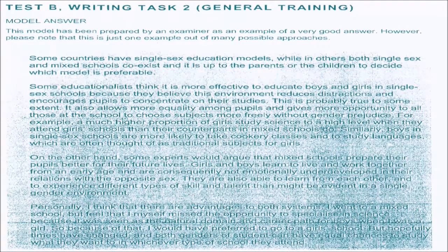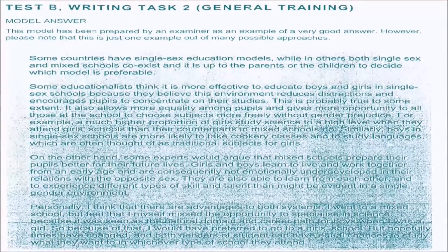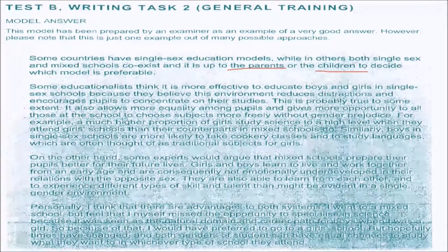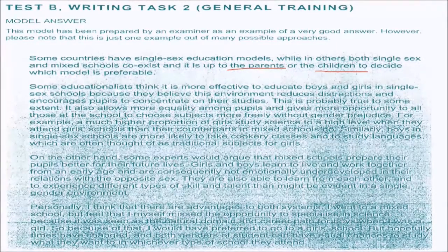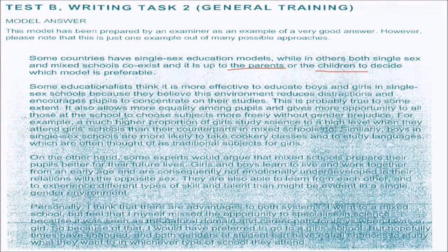This is a very good sample answer, which I will now read. Some countries have single-sex education models, while in others both single-sex and mixed schools co-exist, and it is up to parents or children to decide which model is preferable. Some educationists think it is more effective to educate boys and girls in single-sex schools because they believe the environment reduces distractions and encourages pupils to concentrate on their studies. This is probably true to some extent. It also allows more equality among pupils and gives everyone more opportunity to choose subjects freely without gender prejudices.